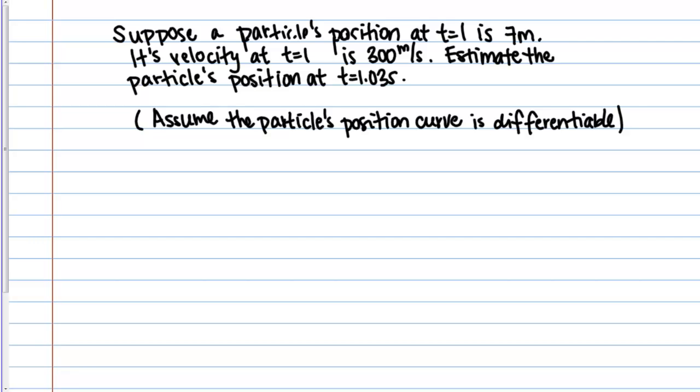So someone's firing particles very quickly, maybe in a physics lab or something, and we know a particle's position at time equals 1 and also its velocity at that time. Its velocity could be changing overall, but we do know what the velocity is at the point time equals 1.